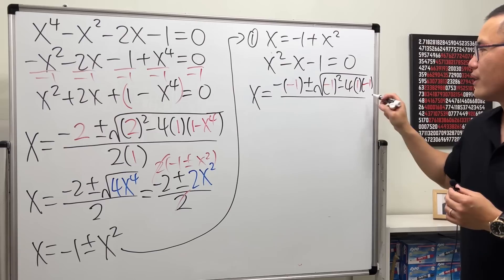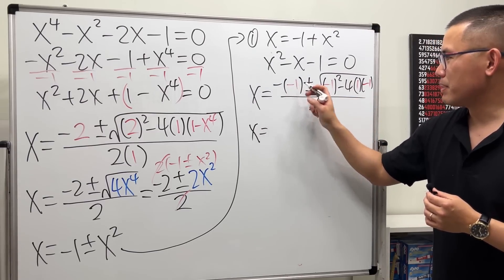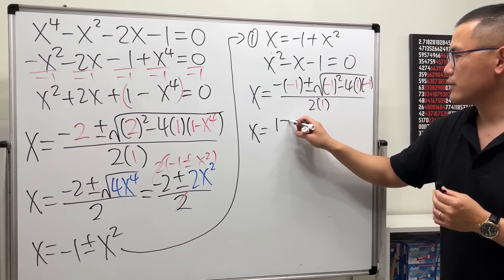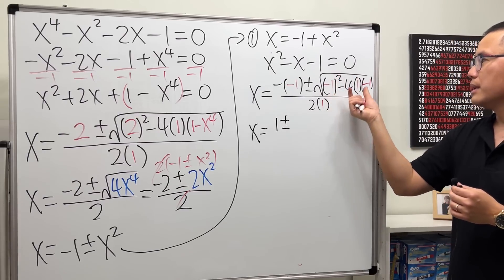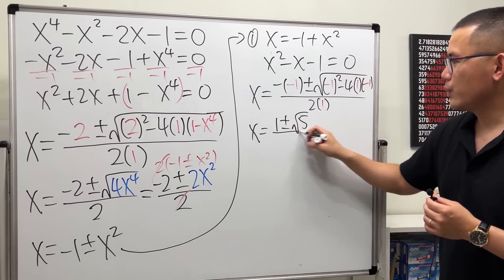All over 2 times 1, and I will just do this in your head. So this is plus 1 and then plus or minus, this is 1 plus 4 which is 5 under the square root.